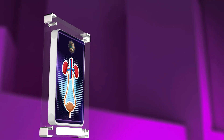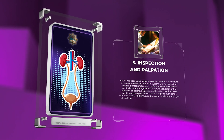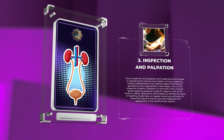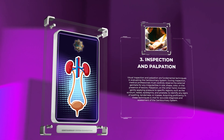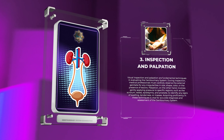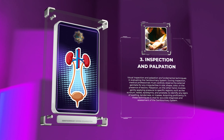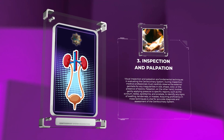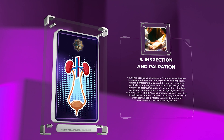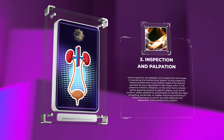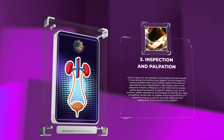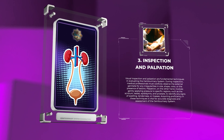Visual inspection and palpation are fundamental techniques in evaluating the genitourinary system. During inspection, medical professionals must carefully observe the external genitalia for any irregularities in size, shape, color, or the presence of lesions. Palpation involves gently applying pressure to specific regions, such as the scrotum, testes, epididymis, and prostate, to identify any signs of swelling, tenderness, or masses. Acquiring proficiency in these techniques is vital for accurate diagnosis and assessment.